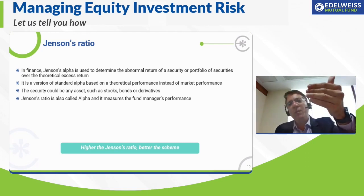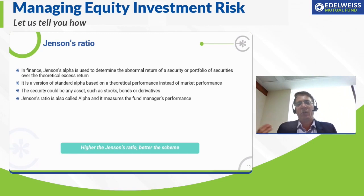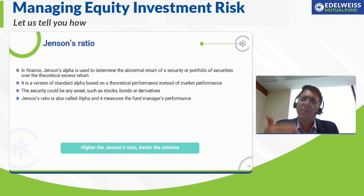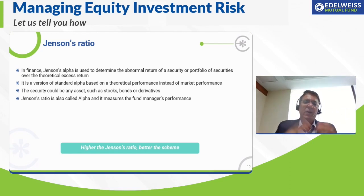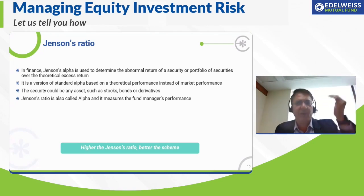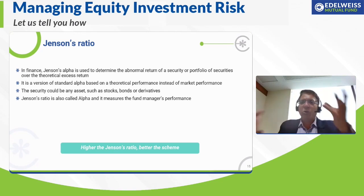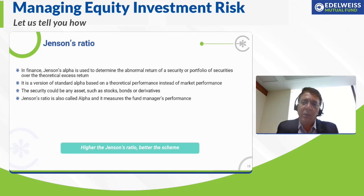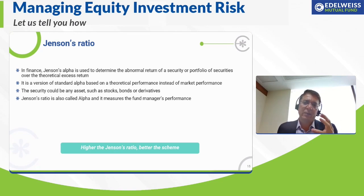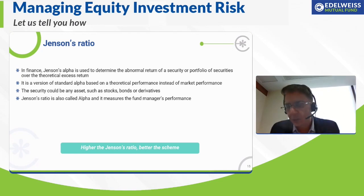Because it is giving better-than-average returns, or outperforming the average, there is a possibility that the average also moves higher over a period of time, and I would be invested in a better-performing scheme. Jensen's ratio is also known as alpha or the fund manager's performance, because the outperformance beyond the expected return can be attributed to the fund manager responsible for the scheme. It's the alpha that a fund manager generates over expected returns — hence it's also called Jensen's alpha. Choose the scheme with the higher Jensen's ratio.